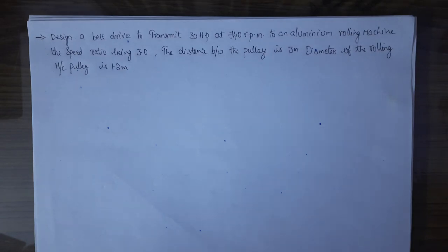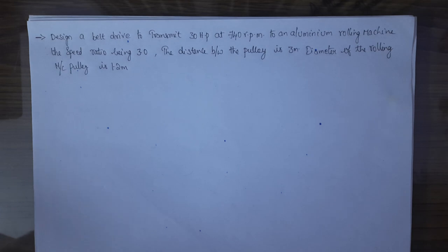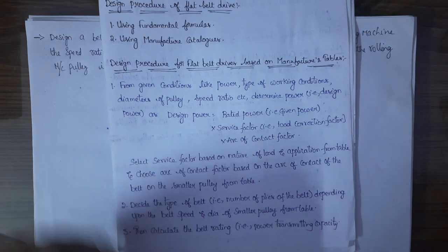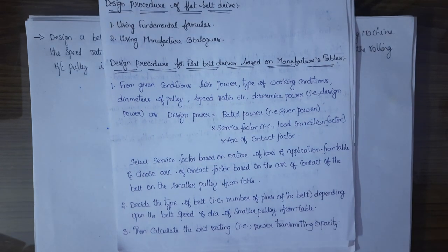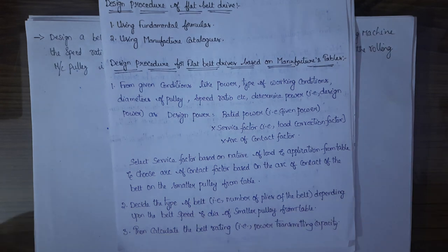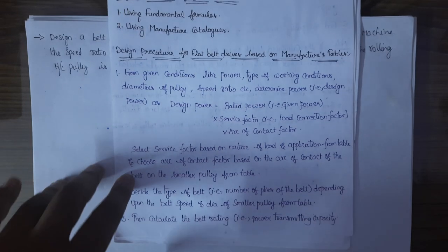Good morning everyone. We are going to discuss the flat belt drive design procedure with an example problem. The design procedure for the flat belt drive can be done in two ways: one is using fundamental formulas learned in a previous semester, and next by using the manufacturer catalog. Here we are going to discuss the manufacturer catalog procedure.